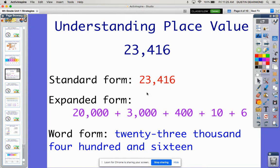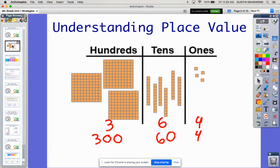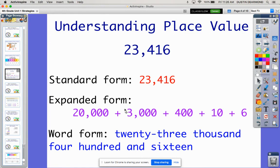Expanded form is when I take it and think about the value of the digit itself. So going back to the base 10 blocks, I looked at the digit, there are 300s, which is actually a value of 300. So we're talking about expanded form, we're talking about the value. So I have 20,000 right here. I have 3,000. I've got 400. I've got one ten, so there's 10, and then six.